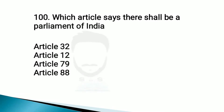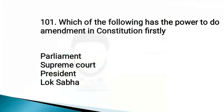Which article says there shall be a Parliament of India? Article 79. Which of the following has the power to do amendments in the constitution first? Parliament.